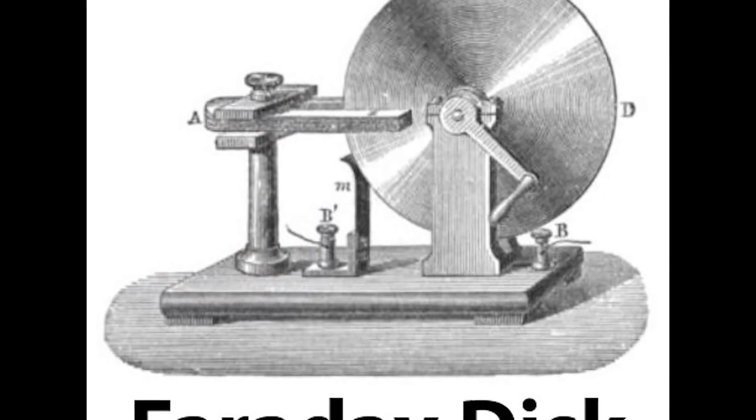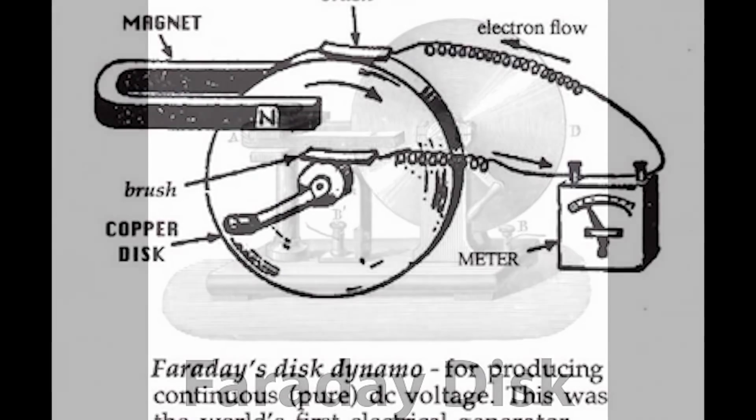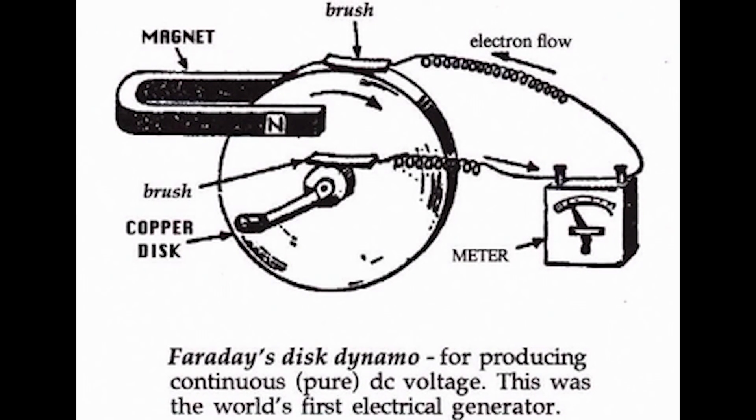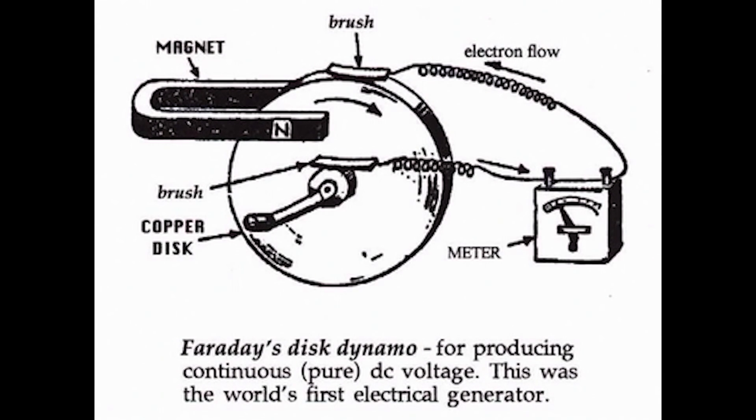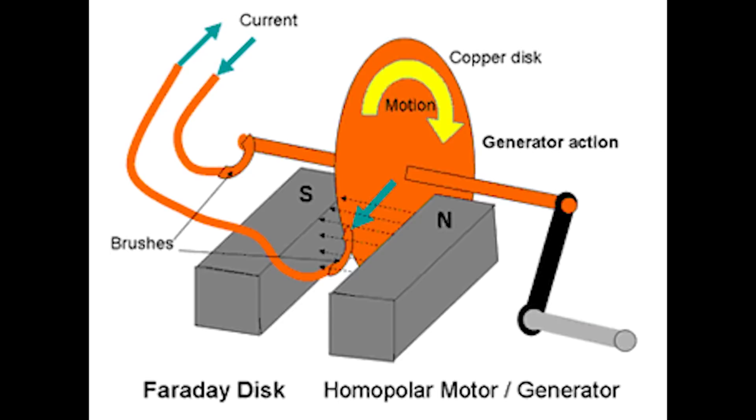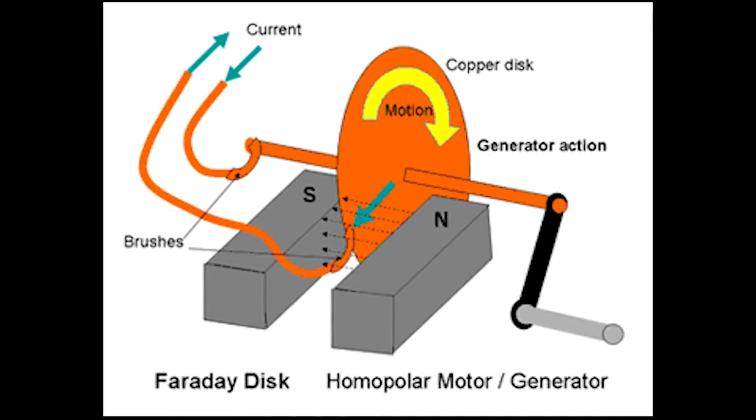A homopolar generator is a DC electrical generator comprising an electrically conductive disk or cylinder rotating in a plane perpendicular to a uniform static magnetic field. A potential difference is created between the center of the disk and the rim or ends of the cylinder with an electrical polarity that depends on the direction of rotation and the orientation of the field.